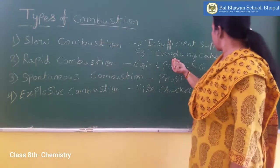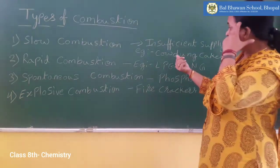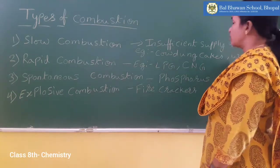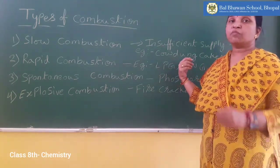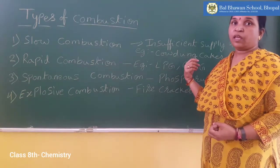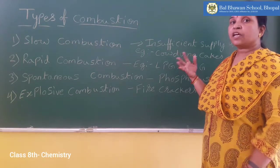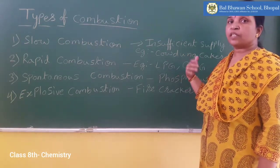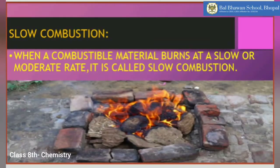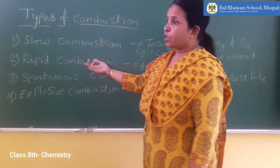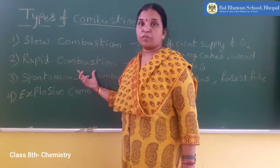Examples of slow combustion are cowdung cakes, wood, or kerosene. When we burn cowdung cakes or wood, we find that they burn very slowly and the amount of heat energy they release is less compared to the amount of pollutants they release. The definition of slow combustion: when a combustible material burns at a slow or moderate rate, it is called slow combustion.